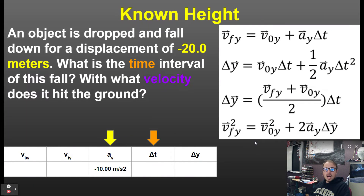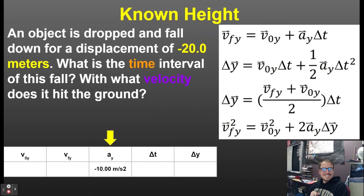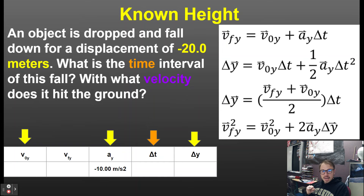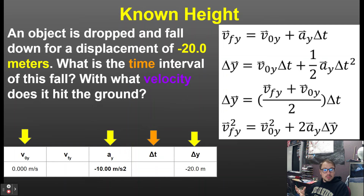Here's a known height problem: an object is dropped and falls for a displacement of negative 20 meters. What is the time interval of this fall? What we're being asked to find is the time interval. We know the initial velocity is zero meters per second and the acceleration is negative 10 meters per second squared, and the displacement is negative 20 meters.